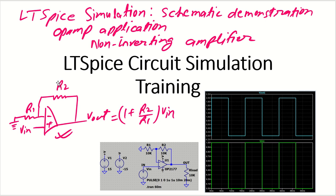So (1 + R2/R1) × V_in will be the output for the non-inverting amplifier. If R2 and R1 are both 10k, that is 10/10 = 1, so 1 + 1 = 2 — the total gain will be 2 times the input. If V_input is 1 volt, the output voltage will be 2 × 1 = 2 volts. You can see V_output is 2 volts whenever the input is 1 volt.